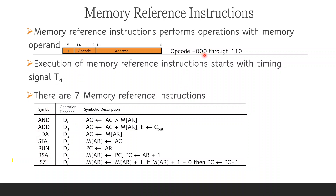The operation decoder assignments are: opcode 0,0,0 maps to D0 (AND), opcode 0,0,1 maps to D1 (ADD), opcode 0,1,0 maps to D2 (LDA). Each instruction has a symbolic description and corresponding micro-operations that define its execution.